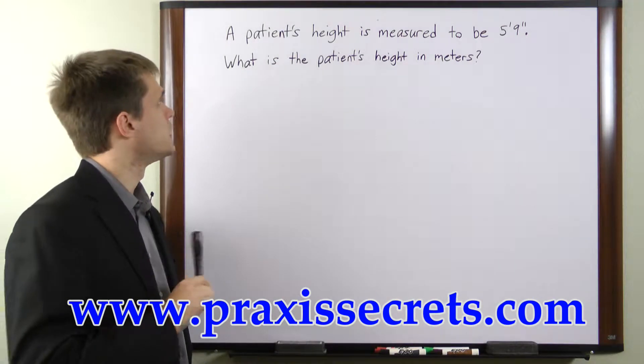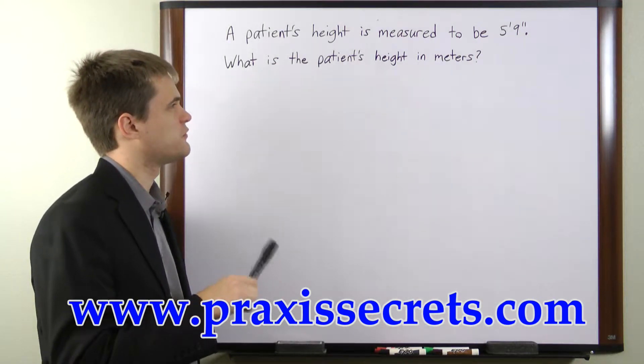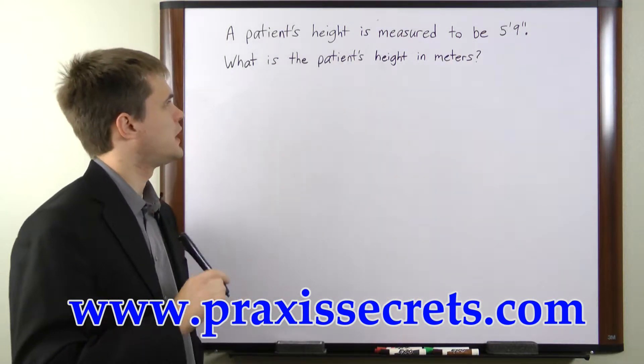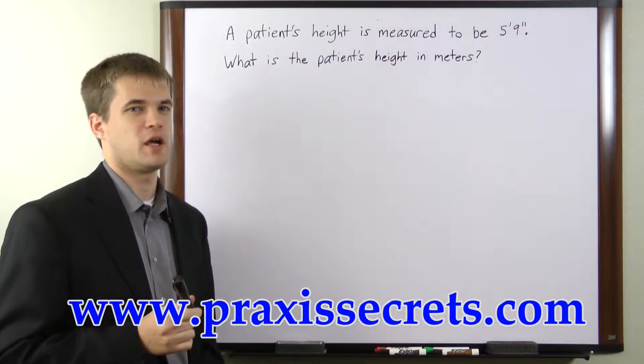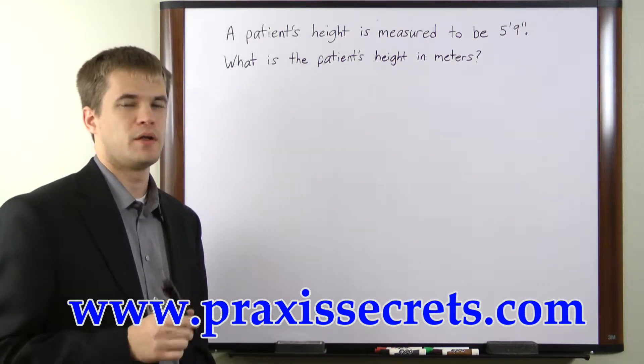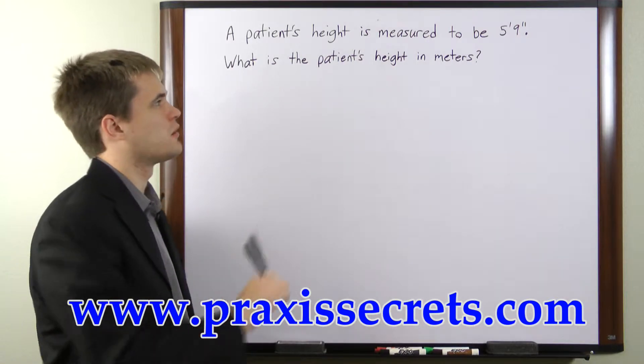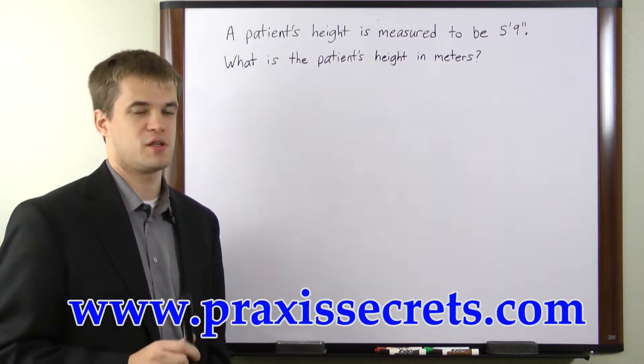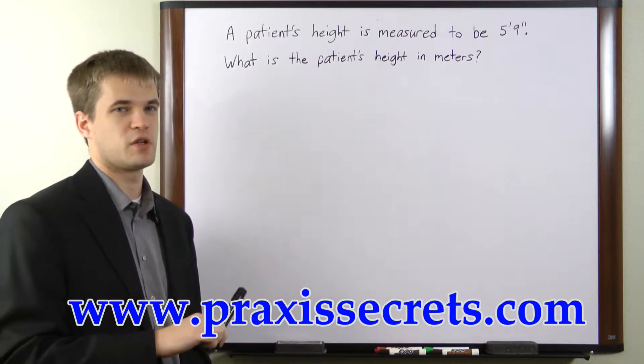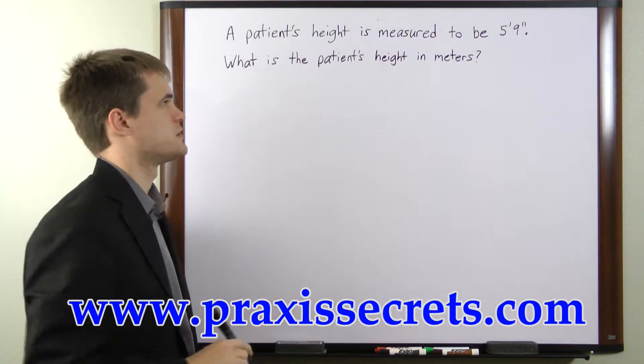In this question we're told that a patient's height is measured to be 5 feet 9 inches and we're asked to find the patient's height in meters. Before we convert to meters we want to convert our feet plus inches into just inches so that we can then convert into metric and get the desired units.